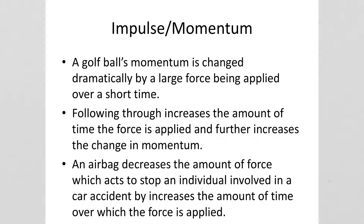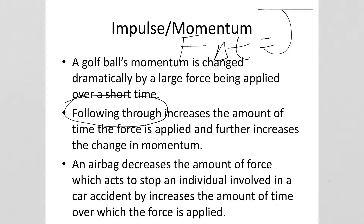A golf ball's momentum is changed dramatically by a large force applied over a short time — you hit the ball really hard. Another way to cause the golf ball's momentum to change even more is to follow through with your swing. By following through, the club is in contact with the ball for longer. So you've got a certain force, but you increase the time, thereby increasing the impulse. If you increase the impulse, you also increase the change in momentum, because the ball is going to leave the club going faster than it otherwise would.